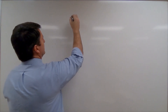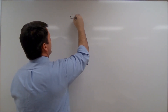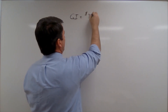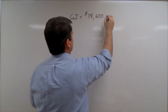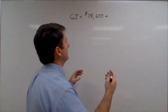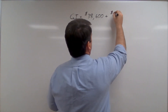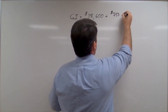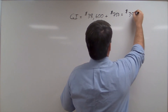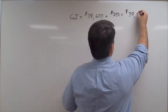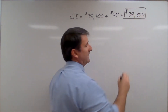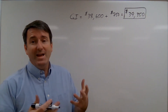Let's start with gross income. Her gross income is going to be her wages of $38,600, plus the $750 she earned in interest from a savings account, for a total of $39,350.